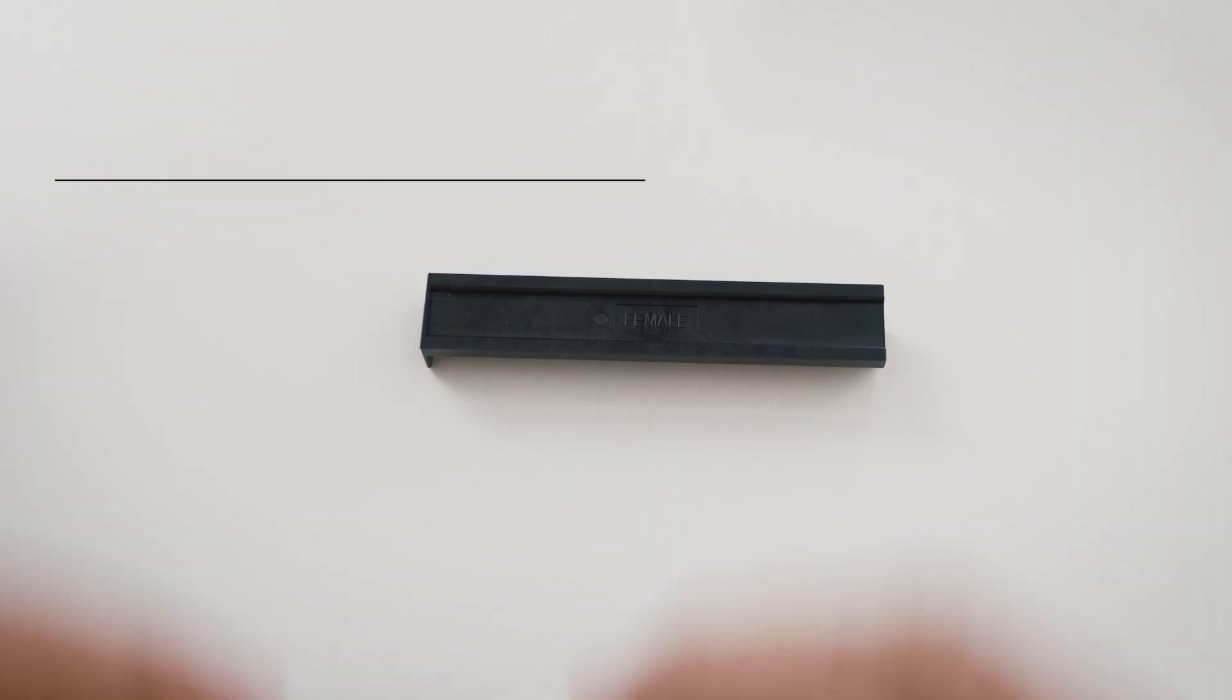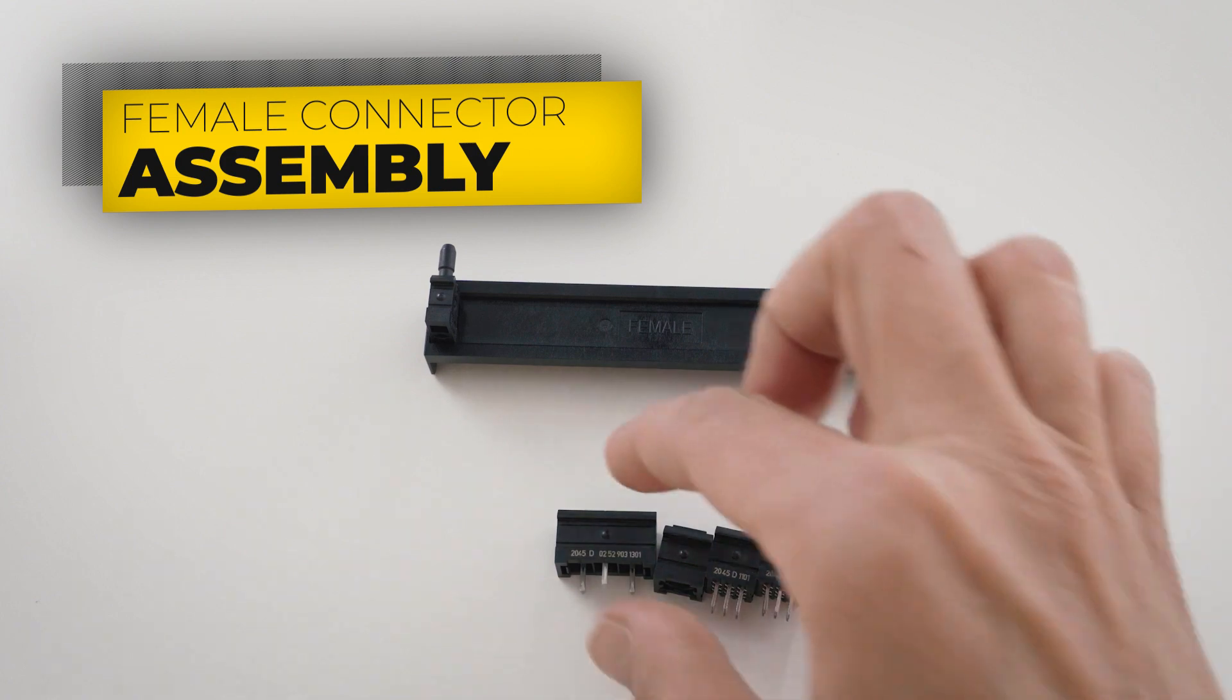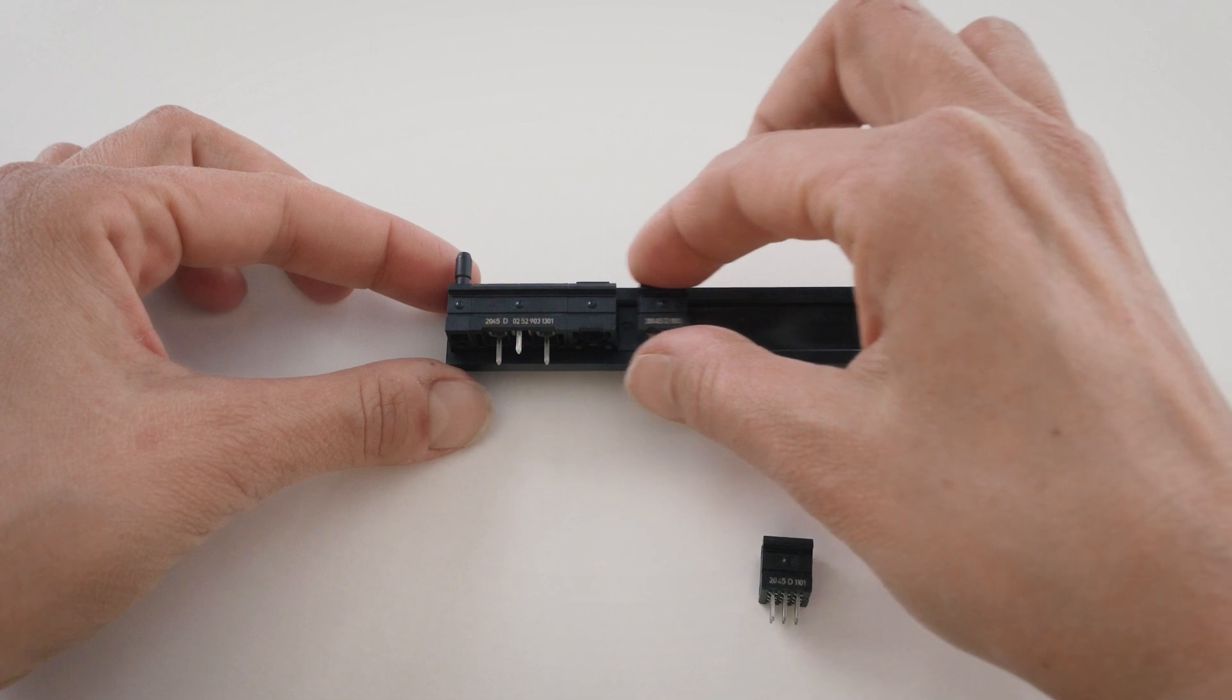You can follow a similar process while making the female connector. Just place them on the female edge and make sure that the coat is facing upwards. As you place them in the correct order, you can seal them with your fixing rail.